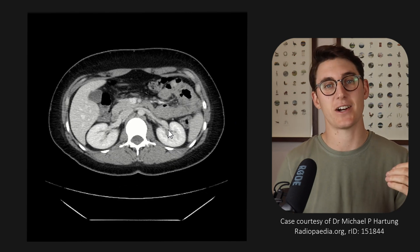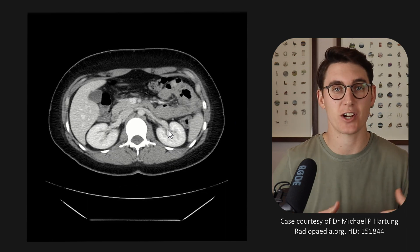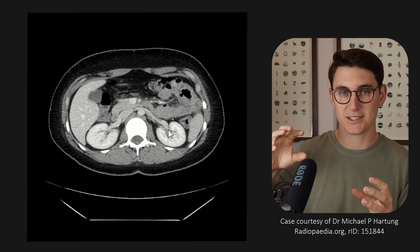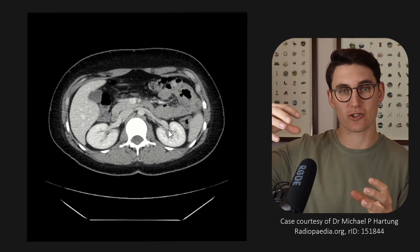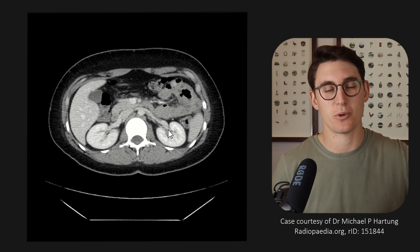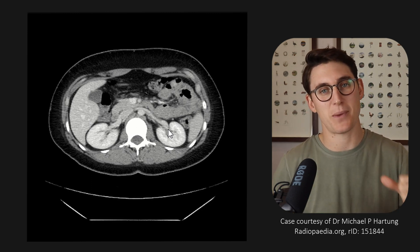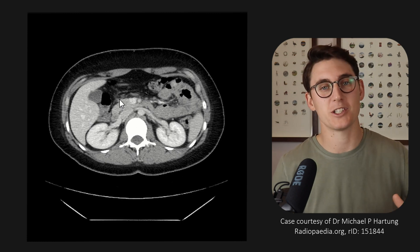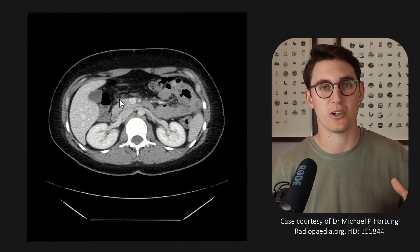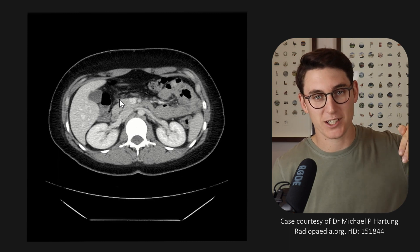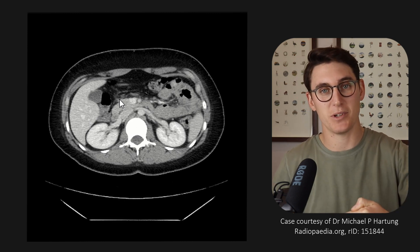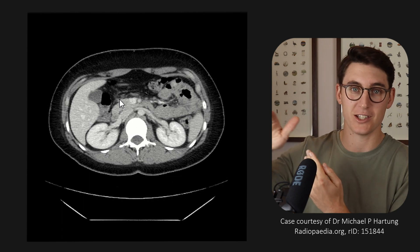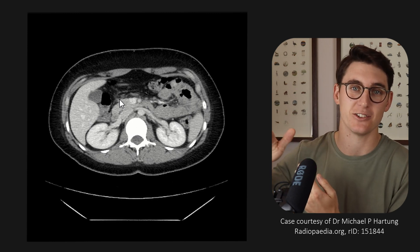Now let's identify some of the gastrointestinal structures that are in the retroperitoneum, starting with the duodenum. The stomach is an intraperitoneal structure, and as it gives off the first part of the duodenum, the duodenum heads backwards and becomes a retroperitoneal structure. That moment it becomes retroperitoneal is the second part of the duodenum. That second part heads inferiorly, crosses the midline, then heads superiorly before becoming the jejunum and becoming an intraperitoneal structure again.